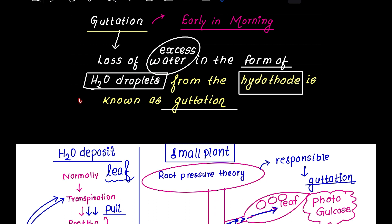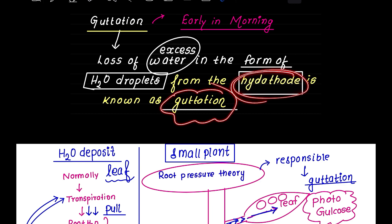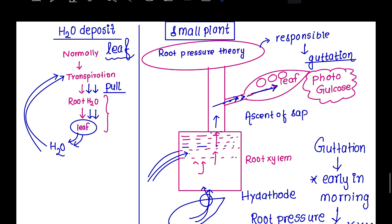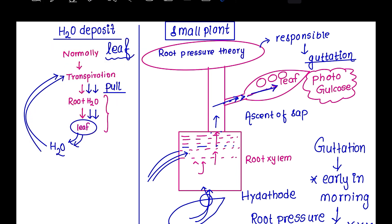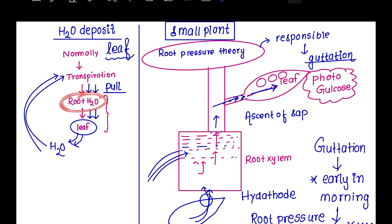Another process is guttation — removal of excess water in the form of liquid droplets from hydathodes, driven by root pressure. Normal leaf transpiration involves water loss as vapor. Transpiration creates a pull that drives water absorption and its movement through the plant.